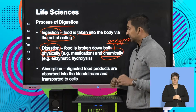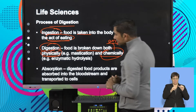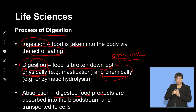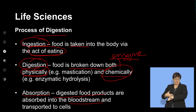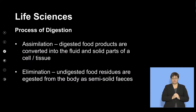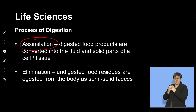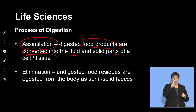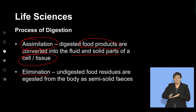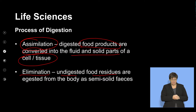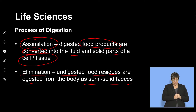We then focus on how the products are absorbed and transported from the digestive system into the bloodstream and then to all cells. We also look at assimilation — how digested food products are put together and converted into what the body needs at the cellular level. Finally, elimination is the removal of undigested food residues that the body does not need, released as semi-solid fecal matter.